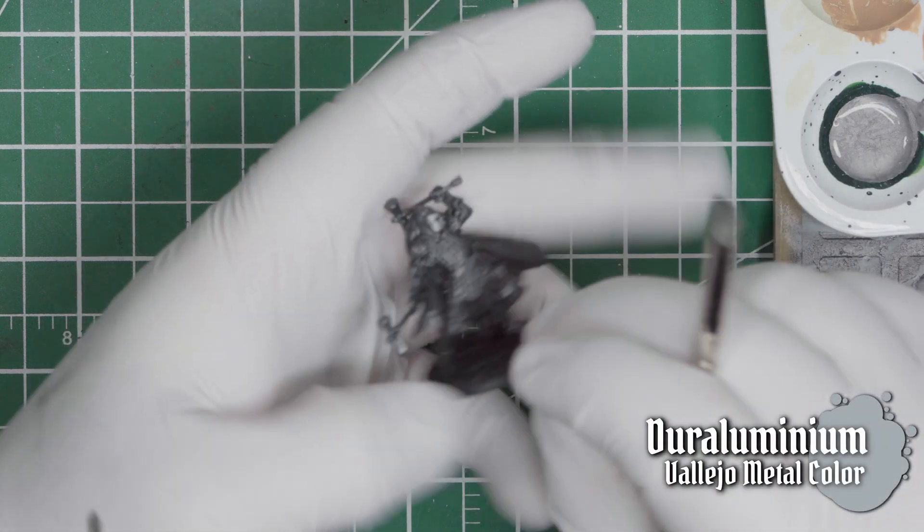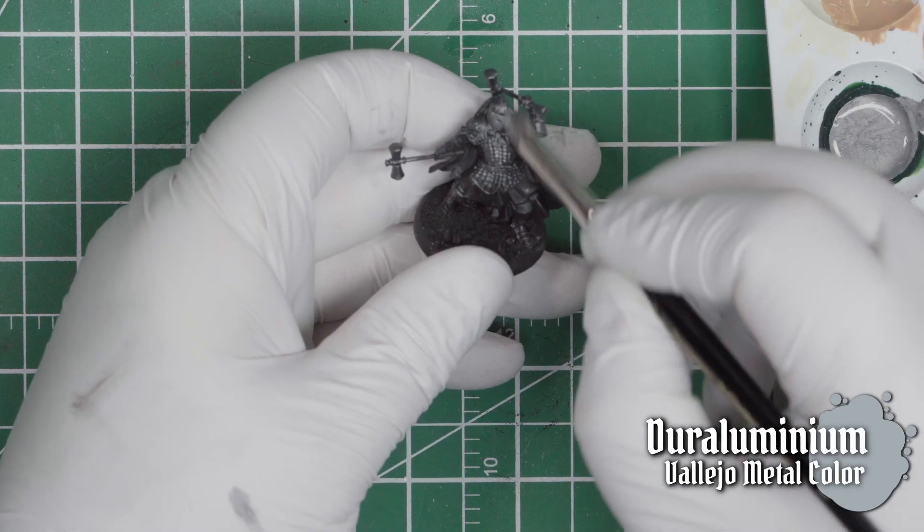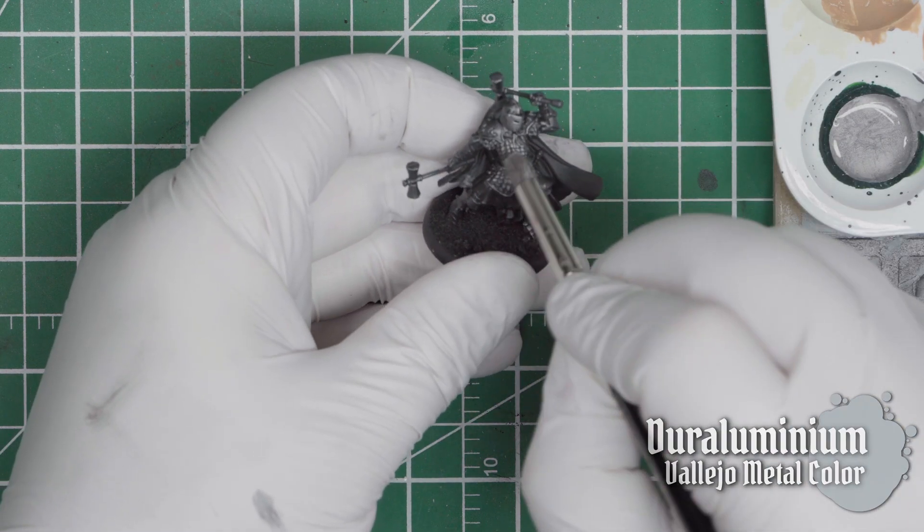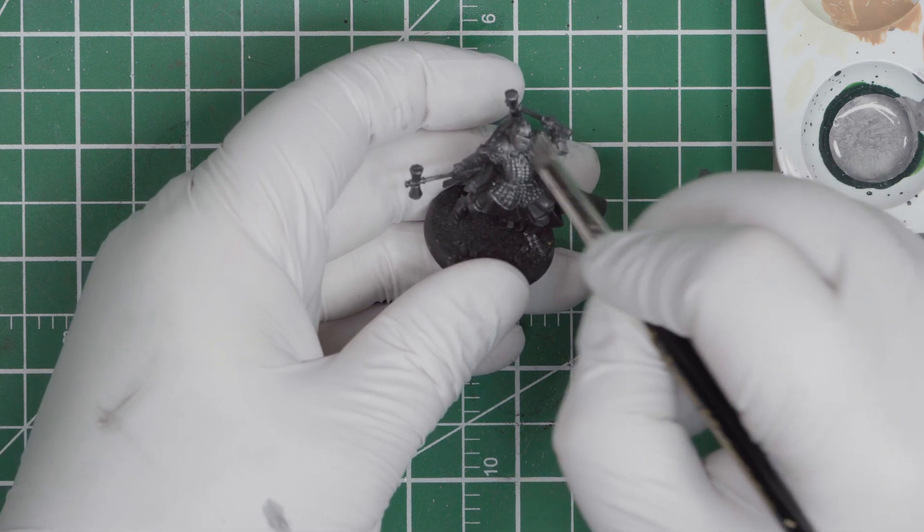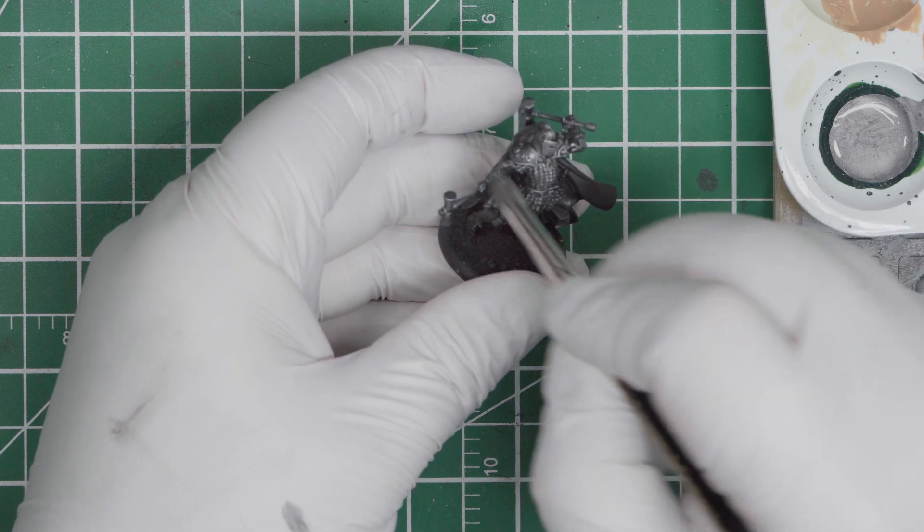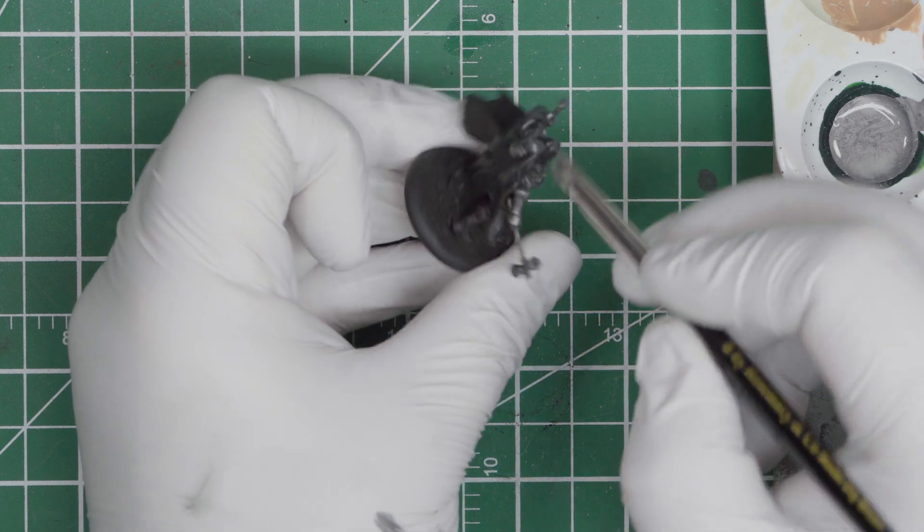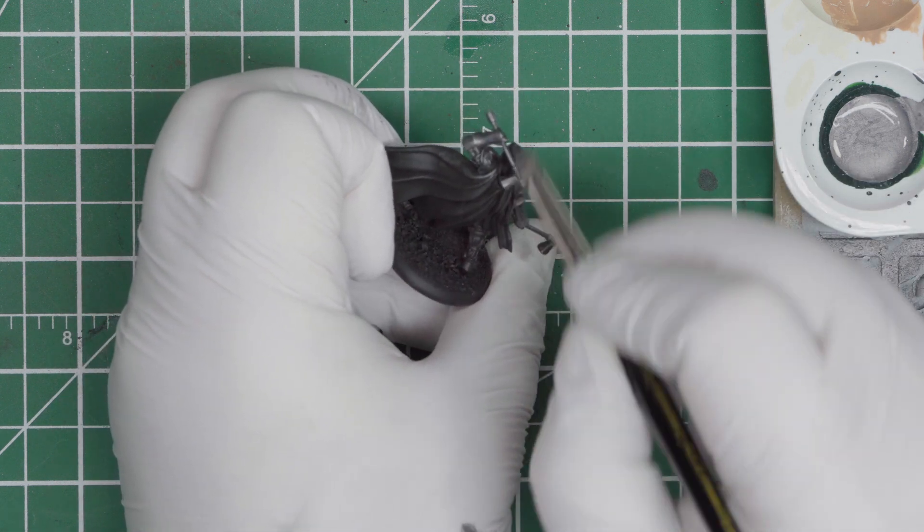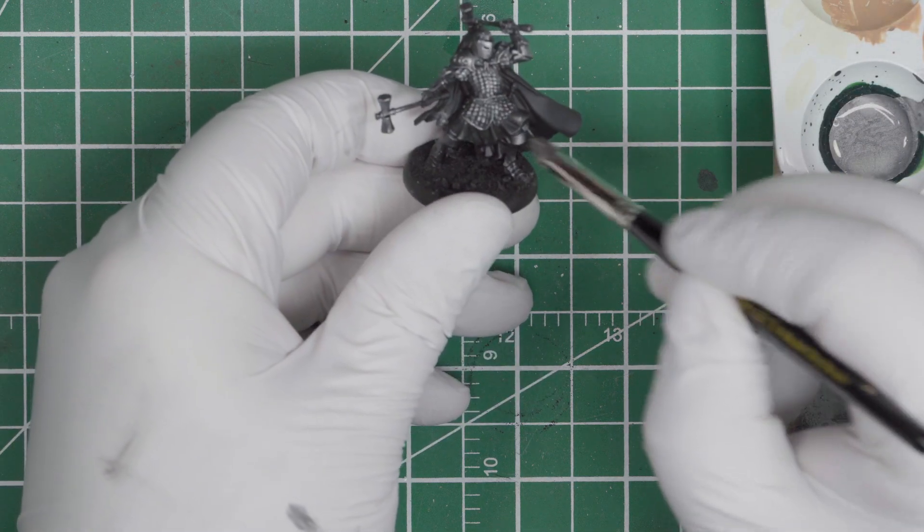And your highlight color will be Vallejo Model Color Duraluminum. This you want to apply from an upward angle and with that mimic the appearance of light hitting the armor from a diffused sunlight as though through an overcast sky. Be really sparing with this, catch the edges, make sure there's very little paint on your brush. Just don't obliterate the mid-tone.